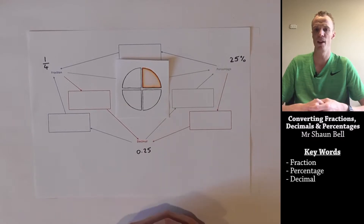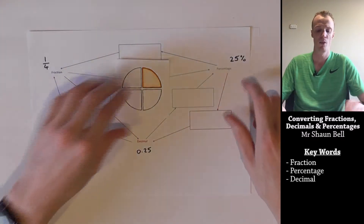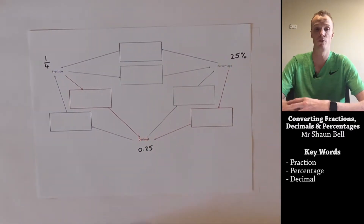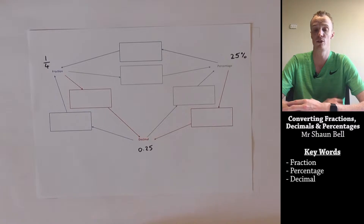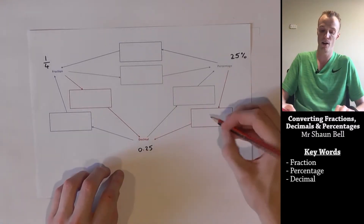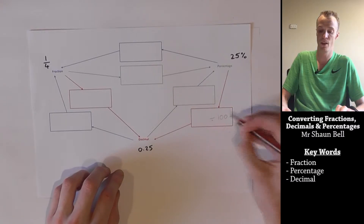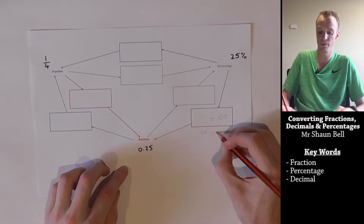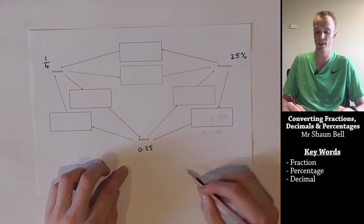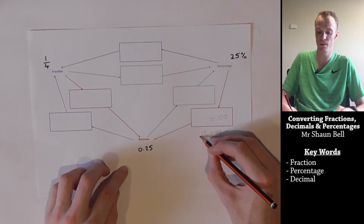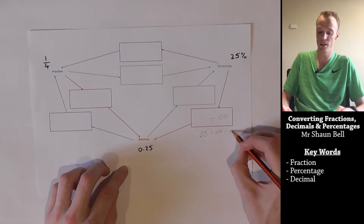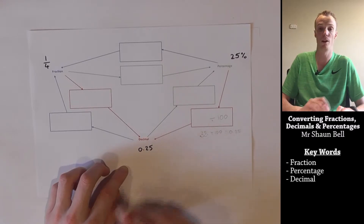But how do we mathematically convert between these three values? Let's start by talking about percentages. The word percent means per 100, or for every 100. We can use this to help remember that to convert a percentage to a decimal, we need to divide by 100. If we take our 25% and divide by 100, we take the decimal place and move it two places to the left, and we find that our answer is 0.25.